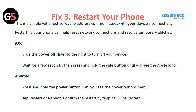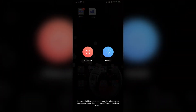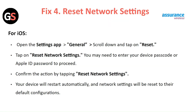Fix 3: Restart your phone. This is a simple yet effective way to address common device connectivity issues. Restarting your phone can help reset the network connection and resolve temporary glitches. For iOS, slide the power off slider to the right to turn off your device, wait a few seconds, then press and hold the side button until you see the Apple logo. For Android, press and hold the power button until you see the power options menu, then tap Restart or Reboot and confirm by tapping OK.